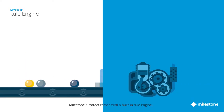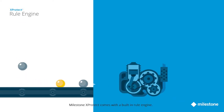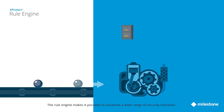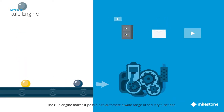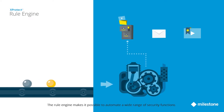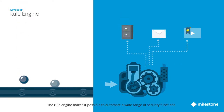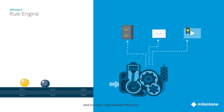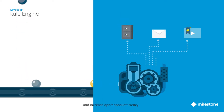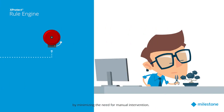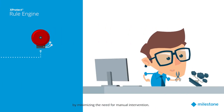Milestone XProtect comes with a built-in rule engine. The rule engine makes it possible to automate a wide range of security functions and increase operational efficiency by minimizing the need for manual intervention.